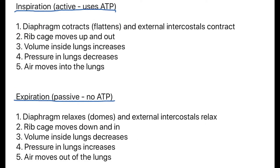Now let's look at the mechanics of breathing at rest. Inspiration is an active process because it uses ATP for muscular contractions. Both the diaphragm and the external intercostals contract. When the diaphragm contracts, it flattens — remember, it flattens, not domes. This causes the rib cage to move up and out, so volume inside the lungs increases and pressure decreases, meaning air moves into the lungs down the pressure gradient.